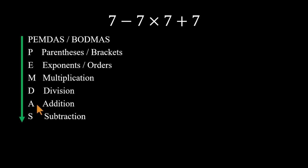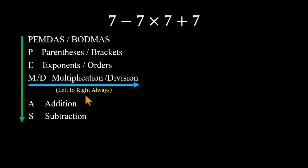And here's the key rule many people forget. When two operations share the same level, like multiplication and division, you always move from left to right. The same holds for addition and subtraction. Left to right, always.